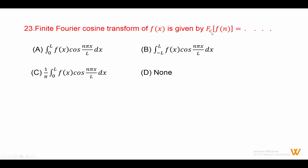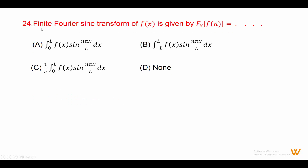Twenty-three: the finite Fourier cosine transform of fx is given by Fc(fn) equals integration from 0 to l of fx times cos(n pi x upon l) dx. Answer is option A.